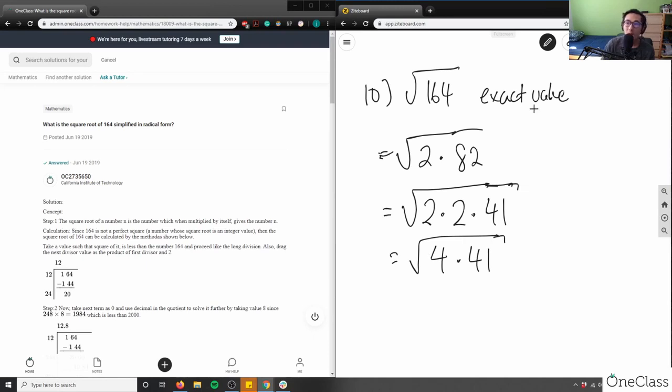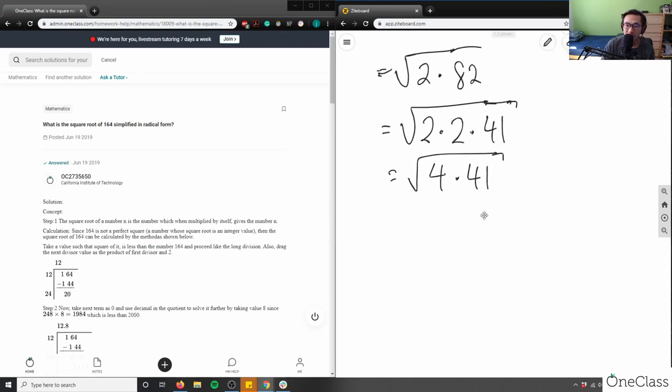What I can do is I can split these up to two different roots. I have root 4 times root 41. So I can visualize it like this as well. And we know the square root of 4 equals 2. So 2 times 41. Here would be my answer.